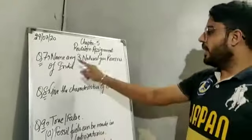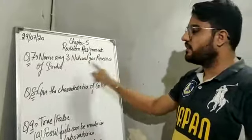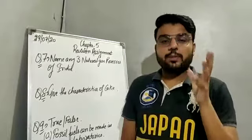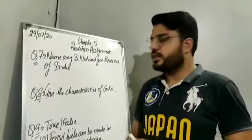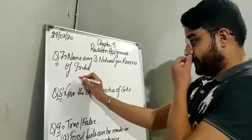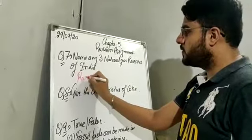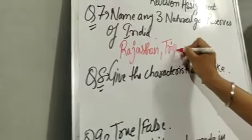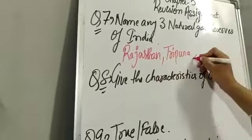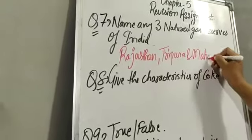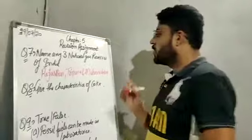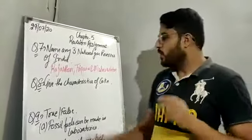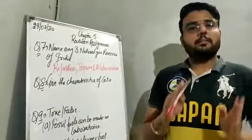Question number seven: name any three natural gas reserves of India. Where is natural gas found in India? We have Rajasthan, Tripura, and Maharashtra. These are the three natural gas reserves of India where natural gas is found.